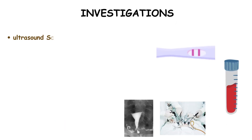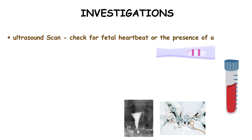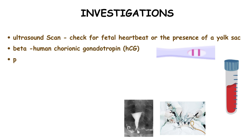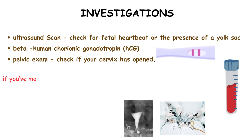When a miscarriage is suspected, certain tests are conducted to understand the situation better. These tests include ultrasound scans, which are used to check for signs like the fetal heartbeat or the presence of a yolk sac. A blood test called beta-human chorionic gonadotropin (beta-hCG) can also be done to measure pregnancy hormone levels. Additionally, a pelvic exam may be performed to see if the cervix has opened prematurely.